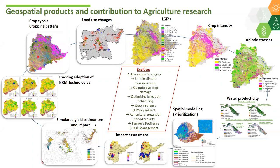The third product is length of growing periods, which is very important for modeling purposes — especially for agronomists and breeders. Cropping intensities are also very important, especially in Asia. For example, in India and South Asia there is no further expansion of cropland, so the only possibility is to intensify cropping patterns, like double crop to triple crop or single crop to double crop.